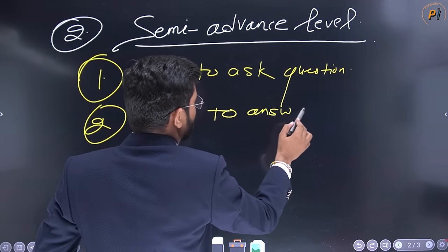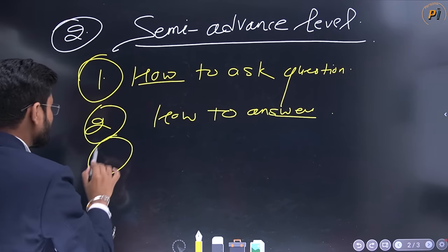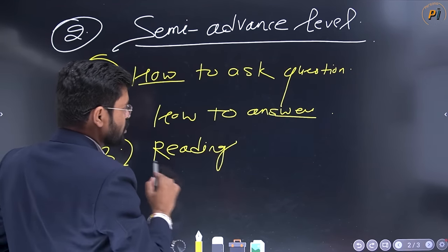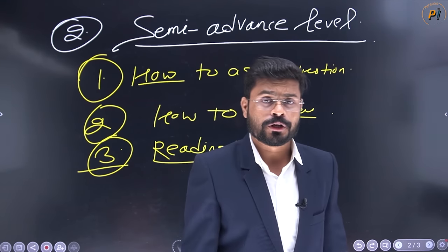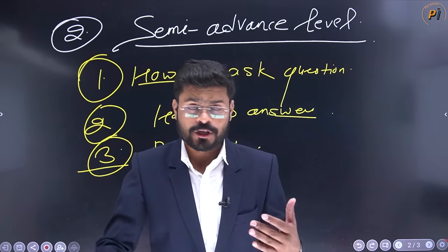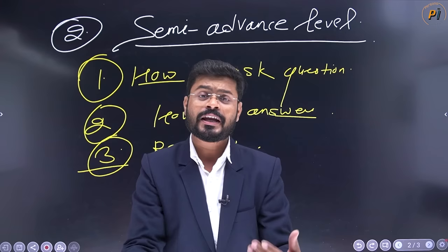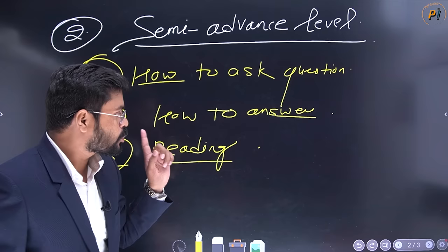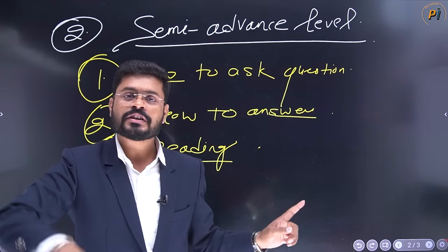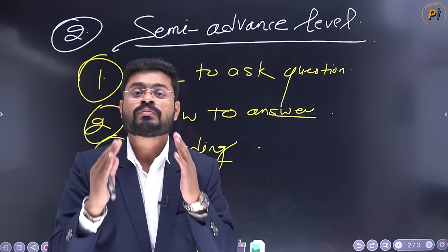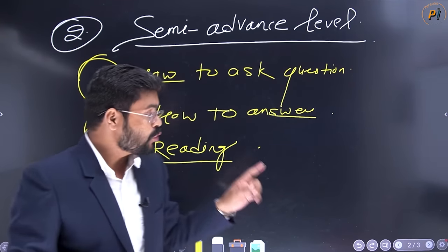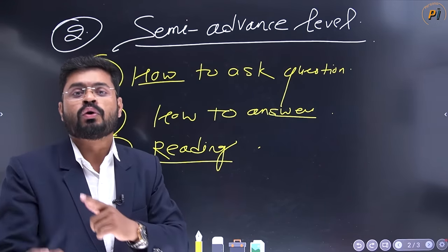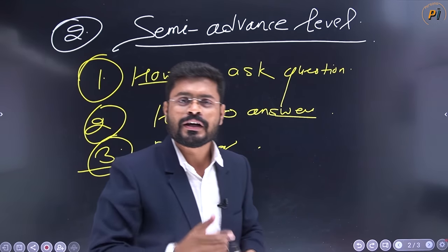So what I am talking about is the semi-advanced level. First, you have to improve how to ask questions. Second, you should learn how to answer — make the answer to your question. Third, you need to work on the second level. If you are from English medium — you can read very well, you can understand everything you read, but you cannot speak — then what I am telling you is that you have to read, and just after reading, speak in your own words.